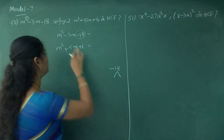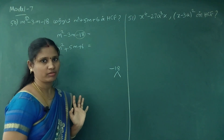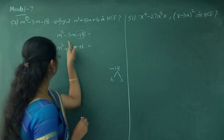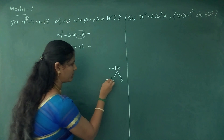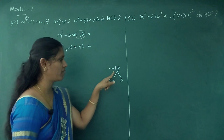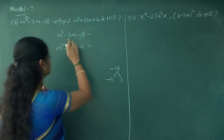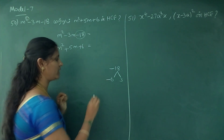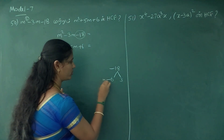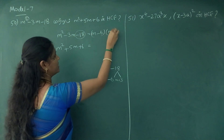Now for M squared minus 3m minus 18: we need two numbers that multiply to minus 18 and add to minus 3. We get minus 6 and plus 3. So the factorization is m minus 6 into m plus 3.